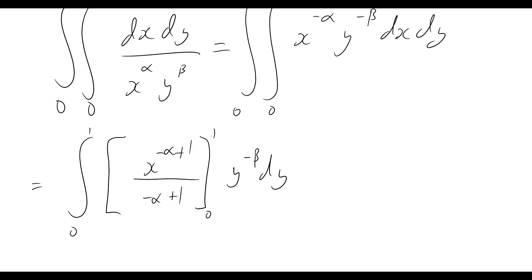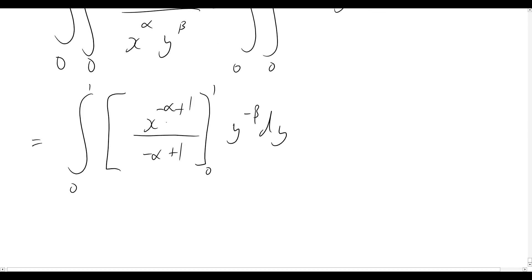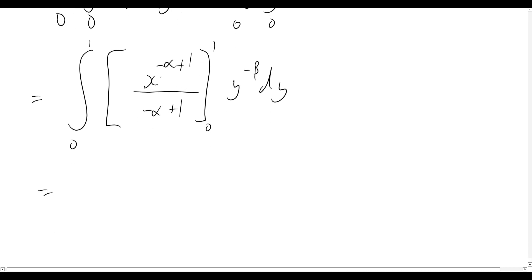Okay, so now quickly substituting our values for x into here. So we'll have one, so one to the power of anything is going to leave us with one, and then we put a zero in there and that will just become zero. So what we see now is our problem essentially becomes the integral from zero to one of one over minus alpha plus one, y to the minus beta dy.